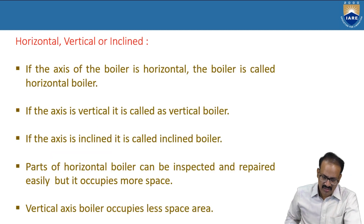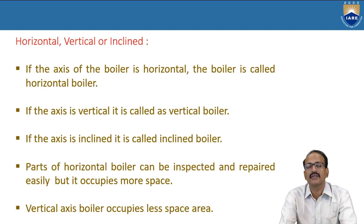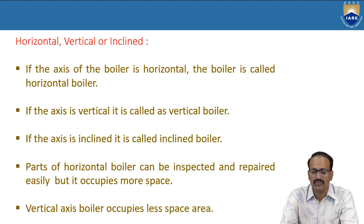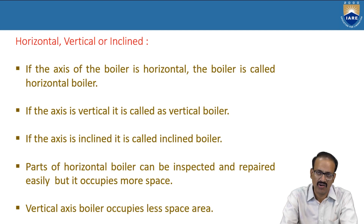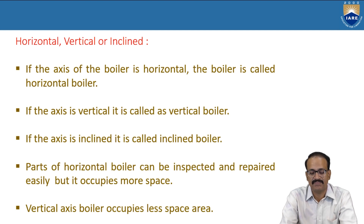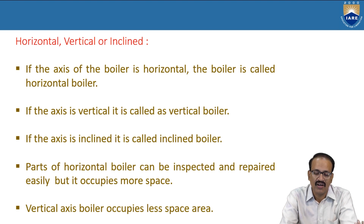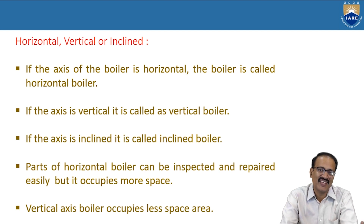These are the different types of boilers, and there can be more also, like electrical boilers. Now we will discuss these types. Horizontal, vertical, and inclined boilers: if the axis is horizontal, it is called a horizontal boiler; if the axis is vertical, it is called a vertical boiler; if the axis is inclined, it is called an inclined boiler.